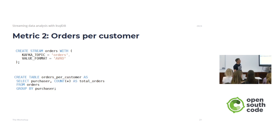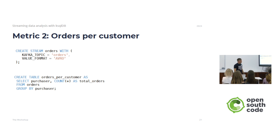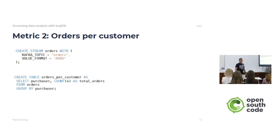Another metric is orders per customer. We create a stream on top of the orders Kafka topic, getting all changes using Kafka Connect, using Avro as the value format. Then we create a table called orders per customer, grouping by purchaser and counting the number of rows to get total orders. This is the second metric we can use to compare what we produce in the target — which is Postgres.